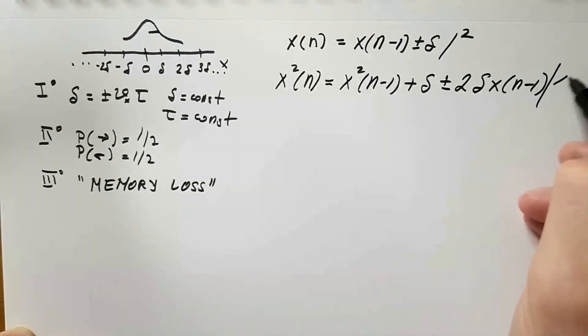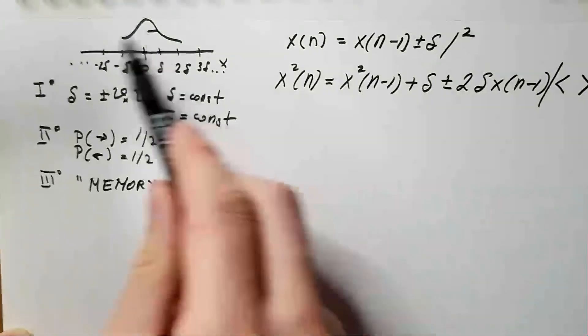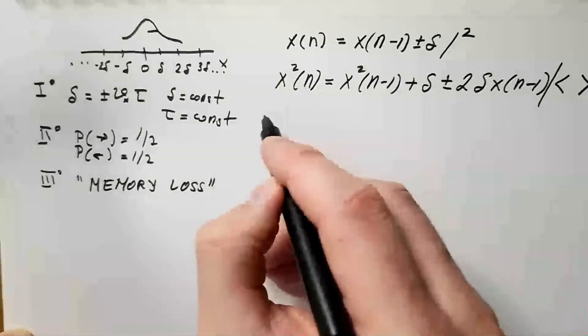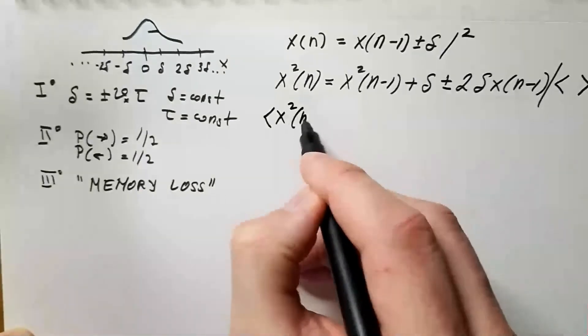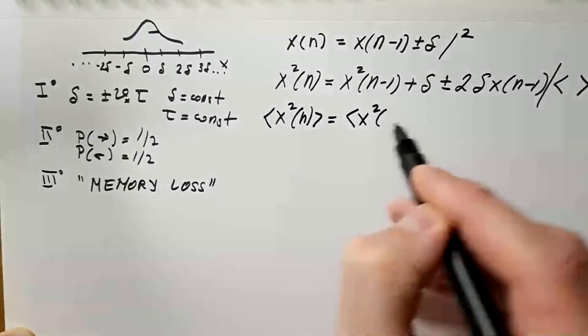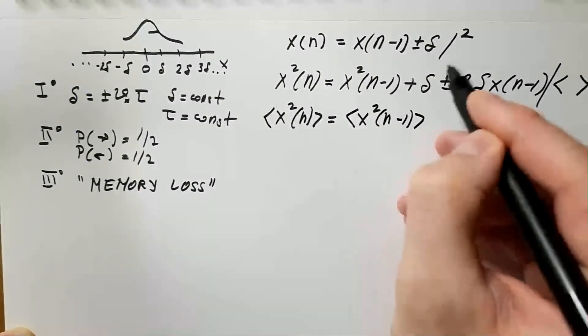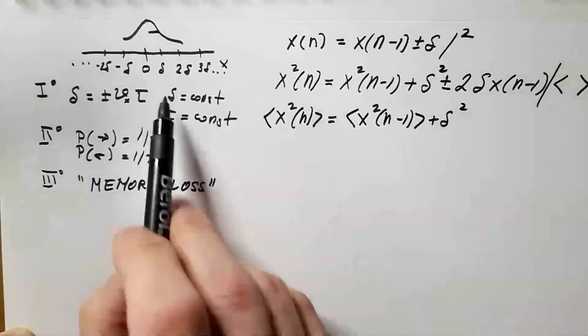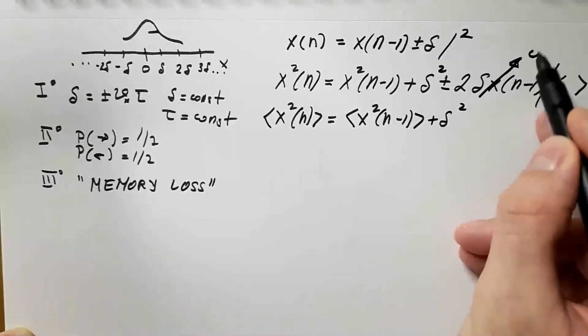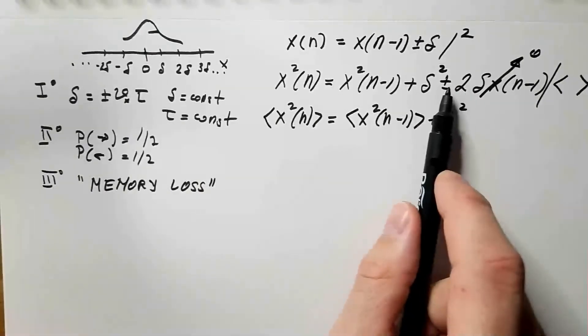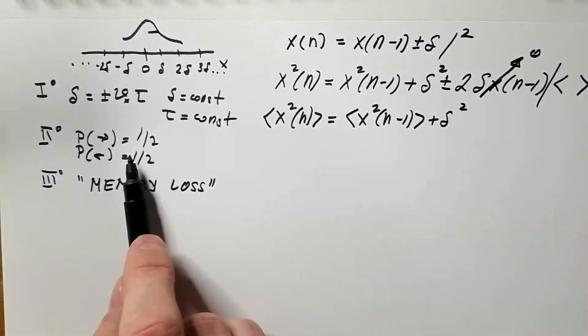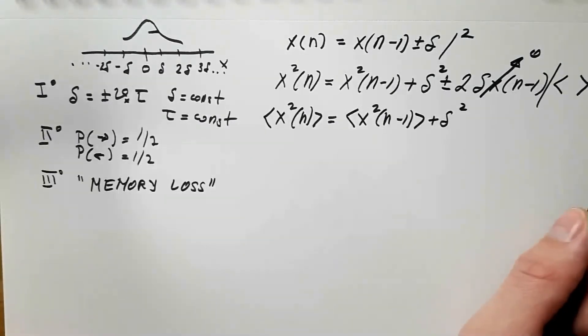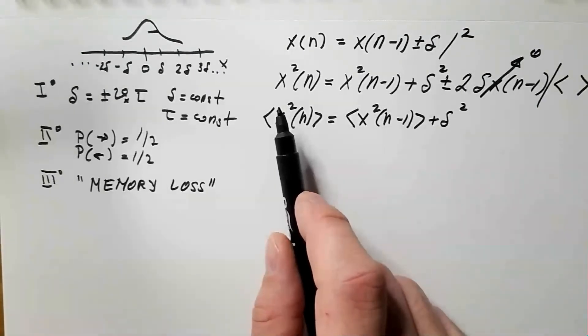And now, I will take the ensemble mean or the mean over a very long period of time of the position of this equation, of the square of the position of the particle, and I get that the mean square distance after n steps is equal to mean square distance after n minus one steps, plus delta squared. I don't have to put mean on the delta squared because delta is constant, and this term is actually zero. It is zero because of rule 2 and 3. They tell me that the probability to go left and right is equally likely.